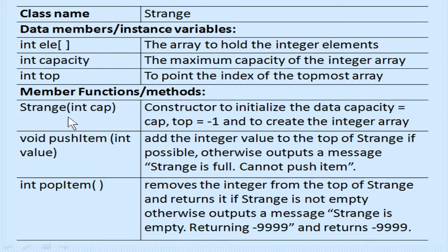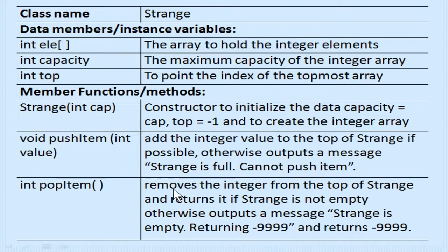The member methods include: a parameterized constructor 'strange' with parameter CAP, which initializes capacity equal to CAP and top equal to minus one. Then there are two methods — void push(item) and void pop(item). These are keywords that indicate it is a stack program. In a queue program you would see keywords like insert, delete, front, or rear, whereas here you see top, push, and pop.